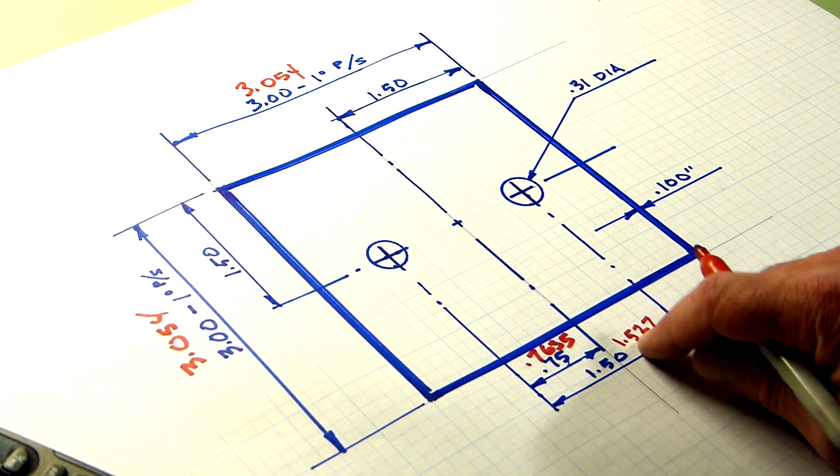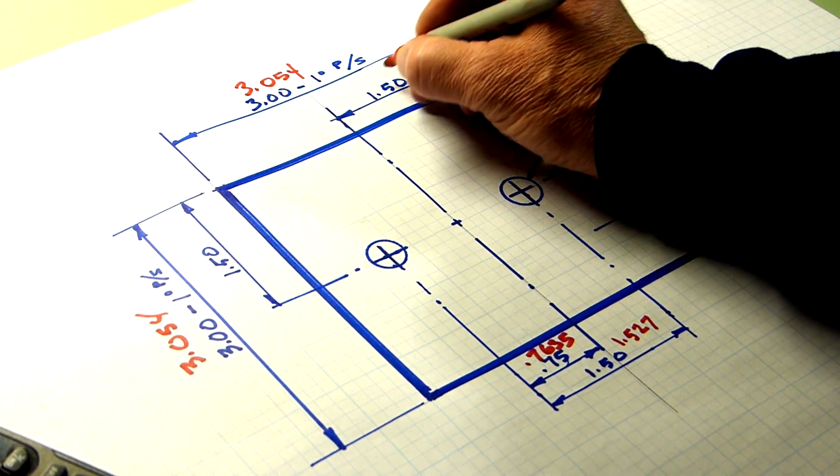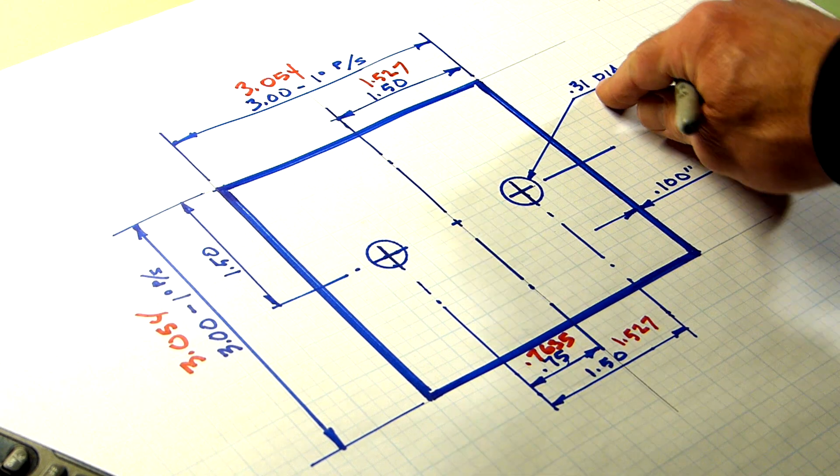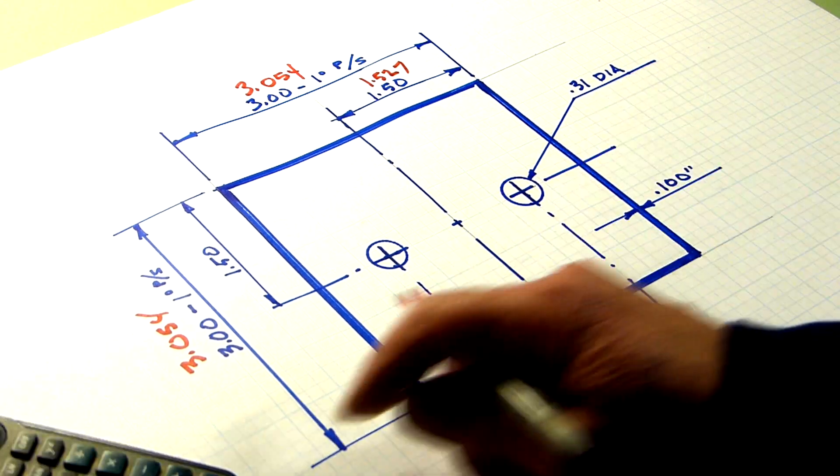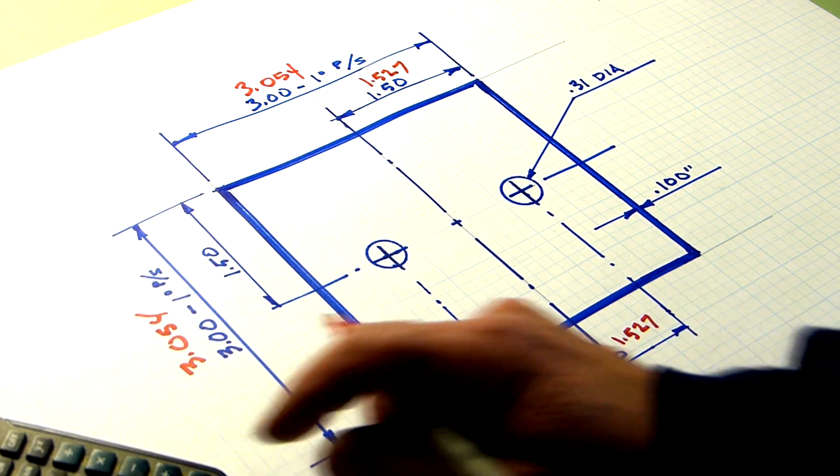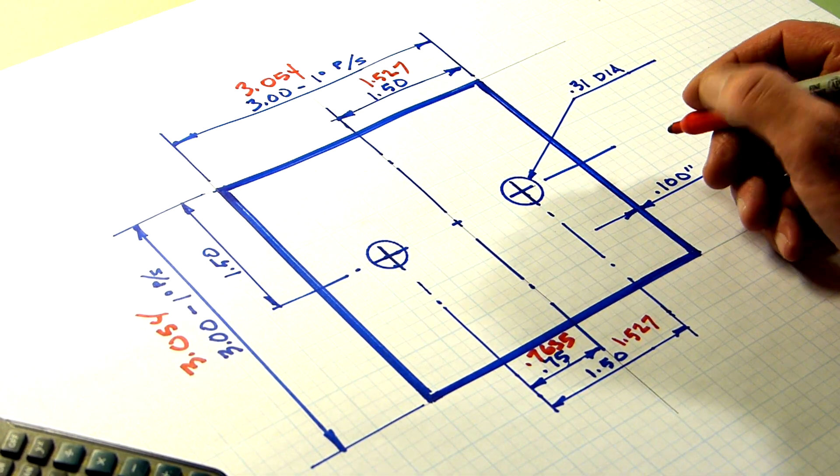The inch and a half, we already know that's going to be 1.527. And the 5/16th diameter, 0.31 times 1.018, 315 and a half.